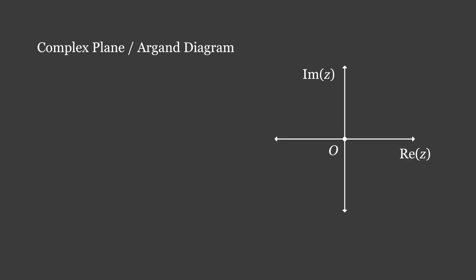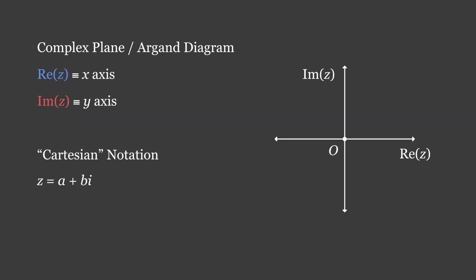Notice that compared to a Cartesian plane, the real axis takes the position of the x-axis, and the imaginary axis takes the position of the y-axis, meaning that we may sometimes use these terms interchangeably. This similarity is also where the name for Cartesian notation emerges from. Therefore, when we plot a complex number in Cartesian form, we treat the real value as the x-coordinate and the imaginary value as the y-coordinate. This relationship can be understood as a plus bi equals the point (a, b).